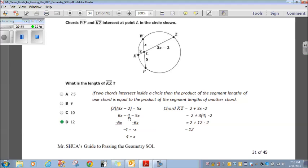Distribute the 2. 6X minus 4 equals 5X. Subtract 6X on both sides. Negative 4 equals negative X. So, 4 is X. We know X is 4. Now, it's asking for the length of KZ. Well, KL is 2. And then, LZ is going to be 3 times 4 minus 2. So, 2 plus 3X minus 2. Substitute the 4 in for the X. 2 plus 3 times 4 minus 2, which is 2, plus 12 minus 2. The 2's cancel, 12. Answer choice D. Okay. Again, your study of circles should remind you of how to answer this question. On to the next one.